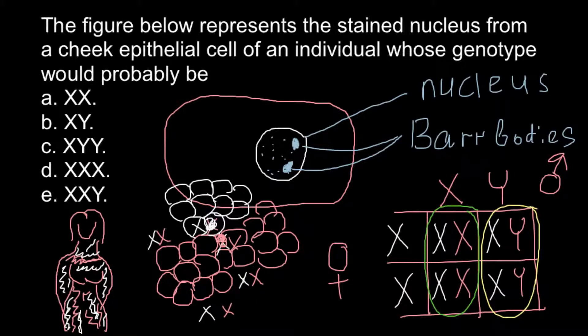Answer C, XYY, would also phenotypically be male. But since there is only one X chromosome, that X chromosome would be active in all cells, would not be turned off, and would not form a bar body.